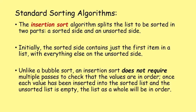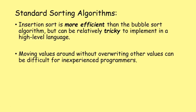The insertion sort algorithm splits the list into two parts: a sorted side and an unsorted side. Initially the sorted side contains just the first item, with everything else on the unsorted side. Unlike a bubble sort, an insertion sort does not require multiple passes. Once each value has been inserted into the sorted list and the unsorted list is empty, the list as a whole will be in order. Insertion sort is much more efficient than bubble sort, but can be tricky to implement in a high-level language.